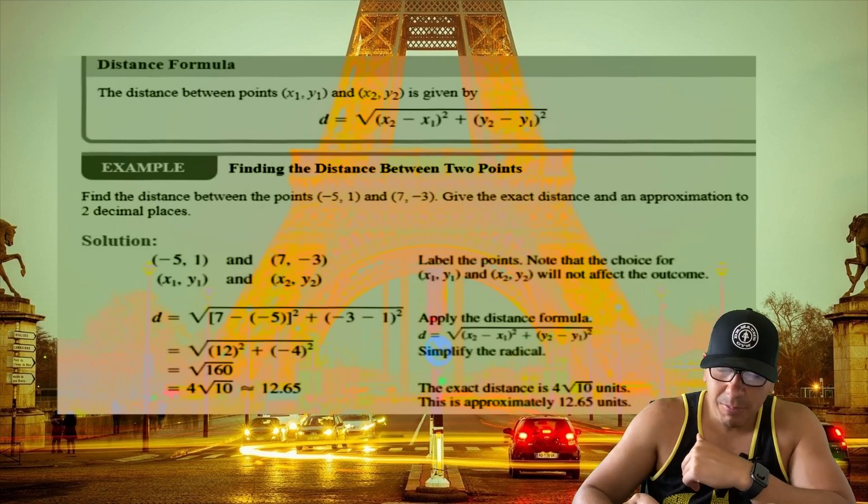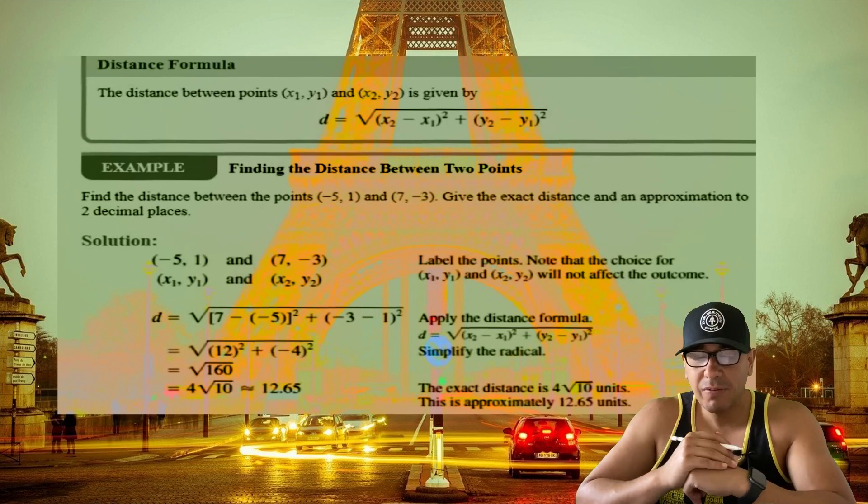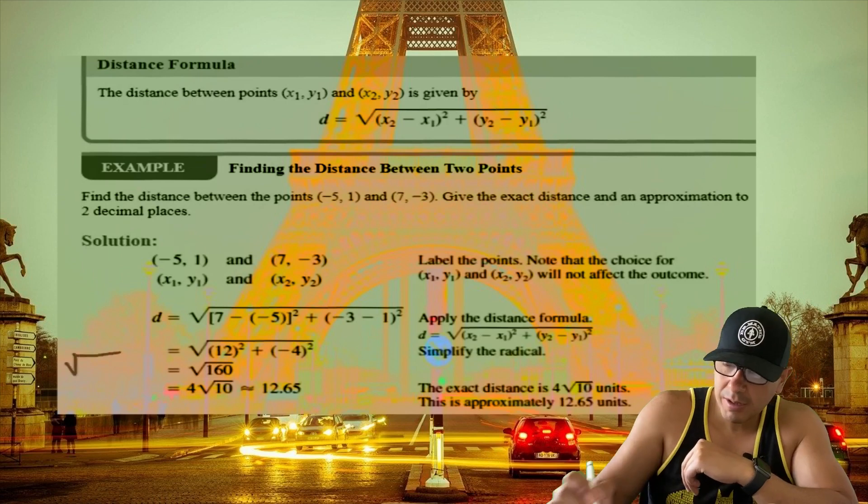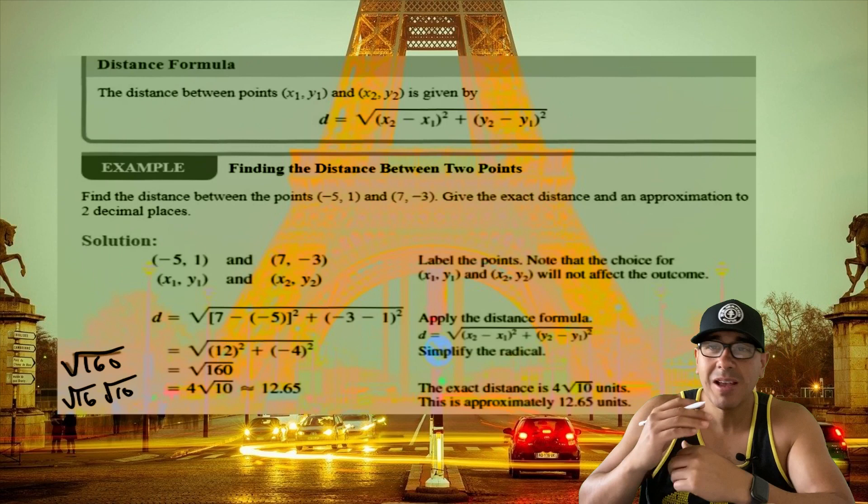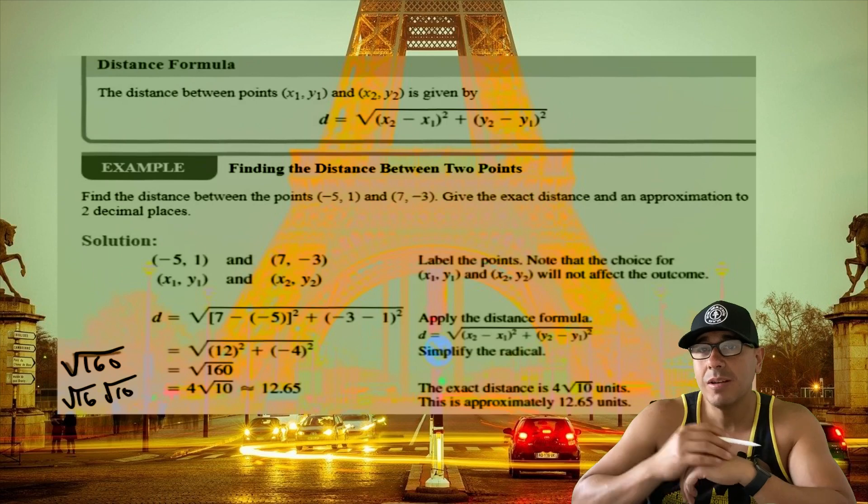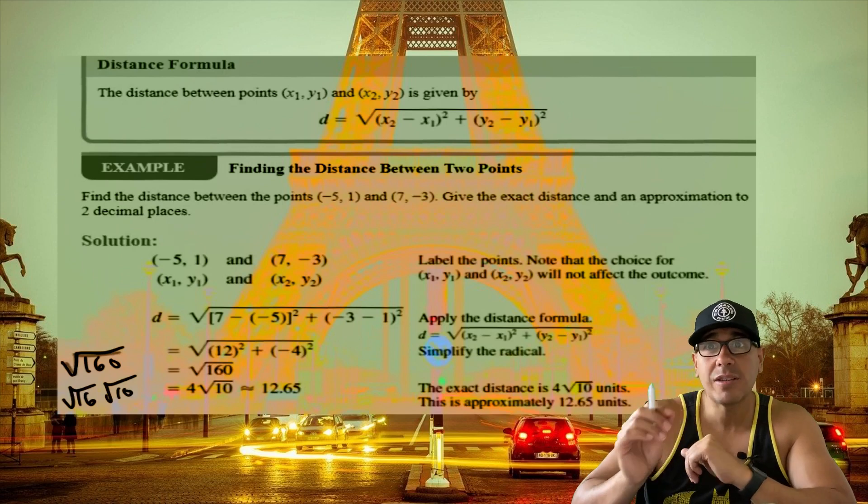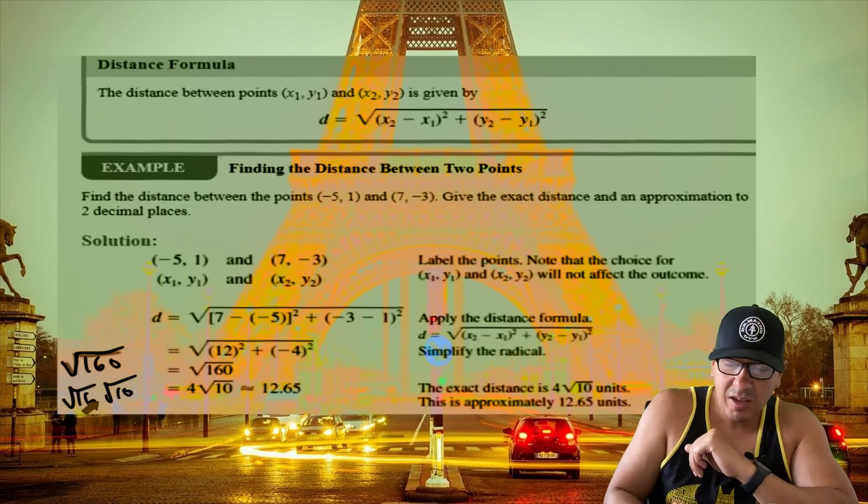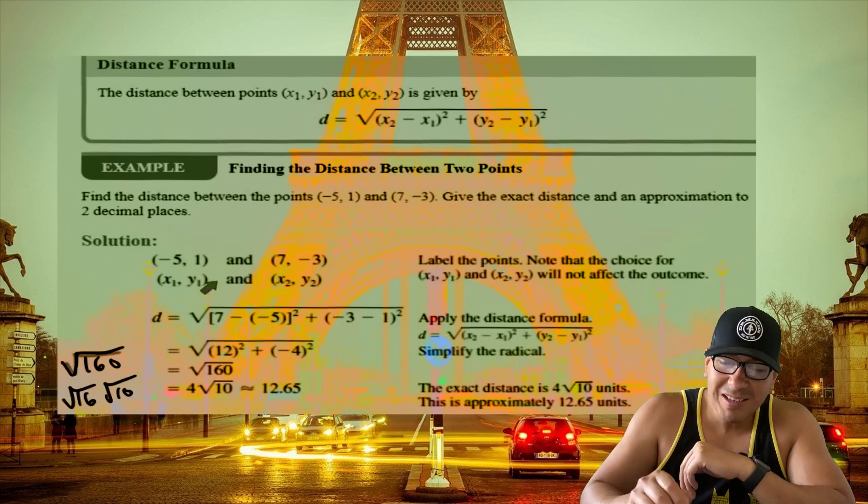If you're interested in how we go from here to here, I encourage you to watch our video below when we talk about simplifying radicals. What we did is we took that 160 and broke it down into two factors. The first factor has to be the largest perfect square. In that video linked below, I go step by step of how exactly this looks if it doesn't make sense at first glance. The square root of 16—that's where that 4 came from. Square root of 10 we can't do nothing with, so it just comes along for the ride.